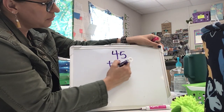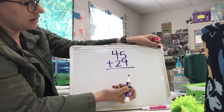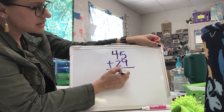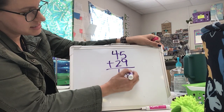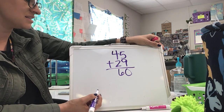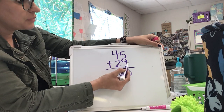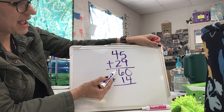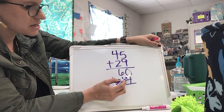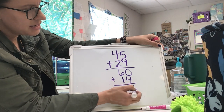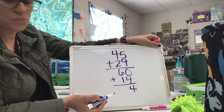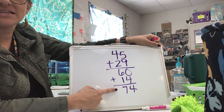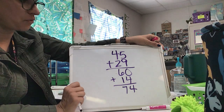Forty-five plus twenty-nine. Using partial sums, four tens plus two tens is six tens — remember, it's six with that zero. Five plus nine equals fourteen. Then I'm going to add these two partial sums. Zero plus four is four, and six tens plus one ten is seven in my tens place. Forty-five plus twenty-nine has a sum of seventy-four.